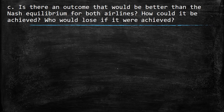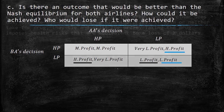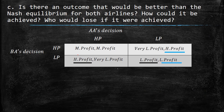Is there a better outcome than the Nash equilibrium? Yes — if both charge high price, both earn medium profit, which is better for the airlines. However, consumers would lose because they'd pay higher prices, reducing transactions in the market and hurting consumer surplus.